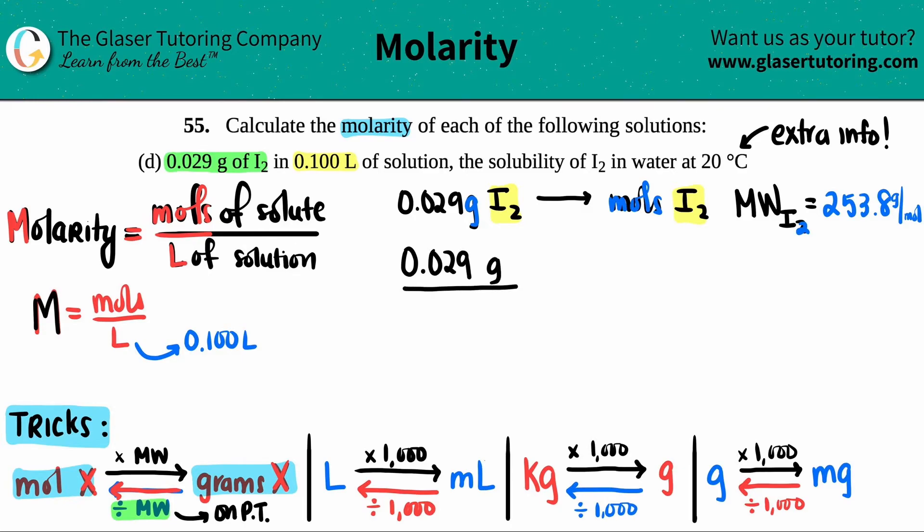0.029 grams divided by 253.8. If I put my units, you'll see the gram on top cancels with the gram on the bottom, leaving the unit of moles. 0.029 divided by 253.8, I should have two sig figs: 1.1 times 10 to the negative fourth moles. This is my mole amount for I2.